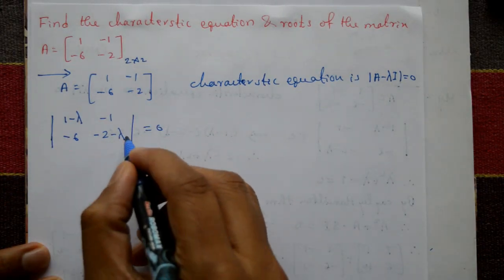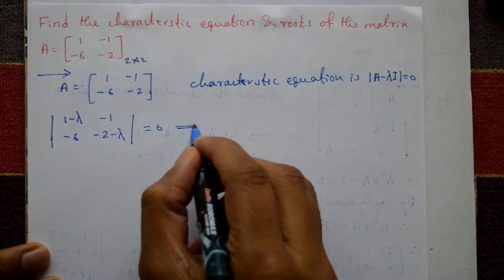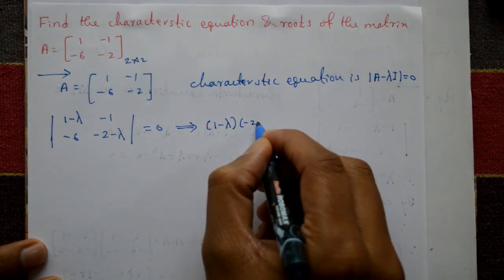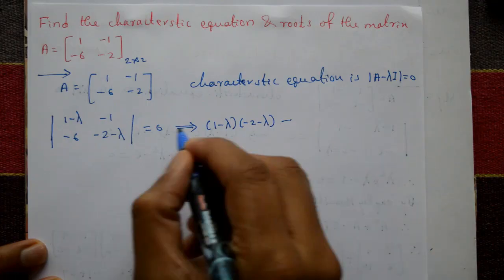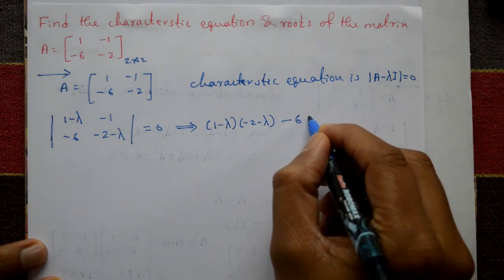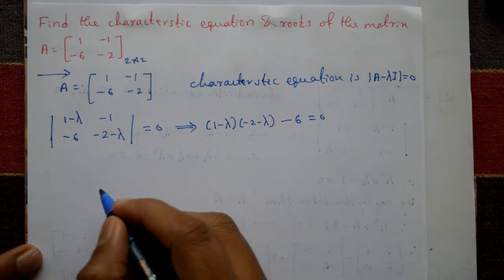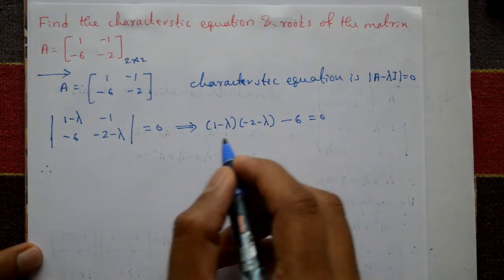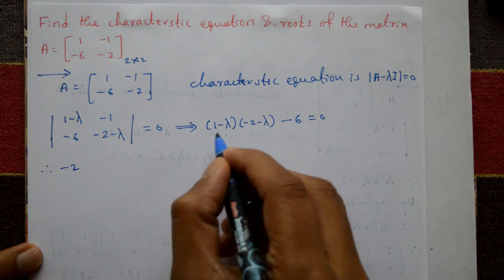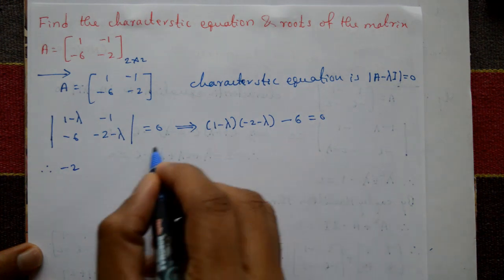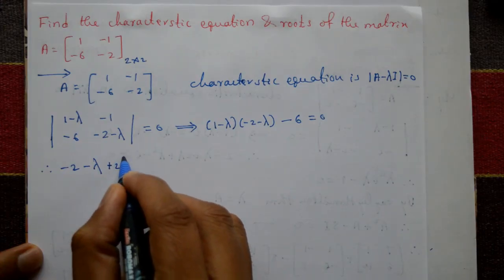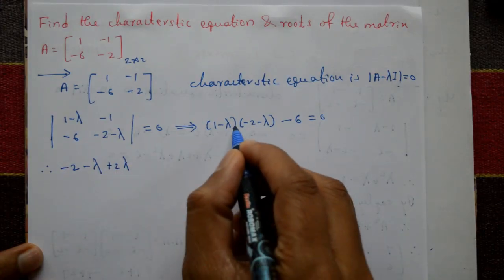Setting this equal to 0 and expanding the determinant: (1 - λ)(−2 - λ) minus (−6)(−1). The second term gives plus 6. Expanding the bracket: 1×(−2) − λ(−2) − λ(1) + λ² gives −2 + 2λ − λ + λ².